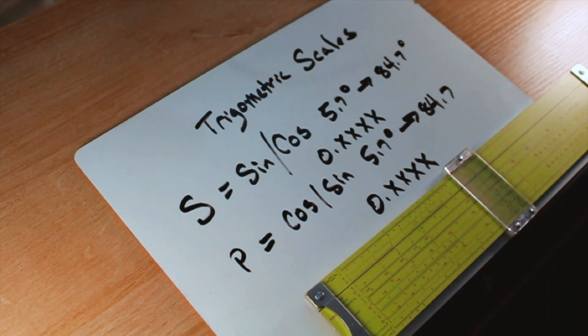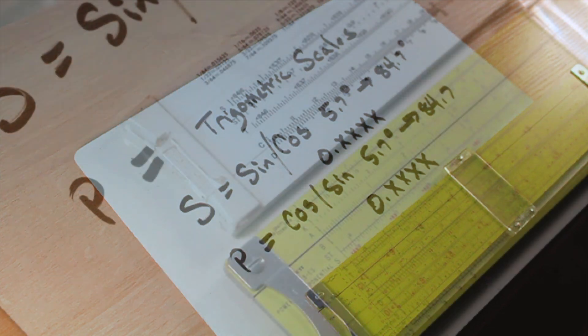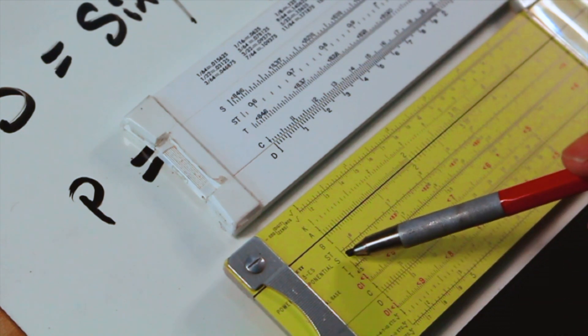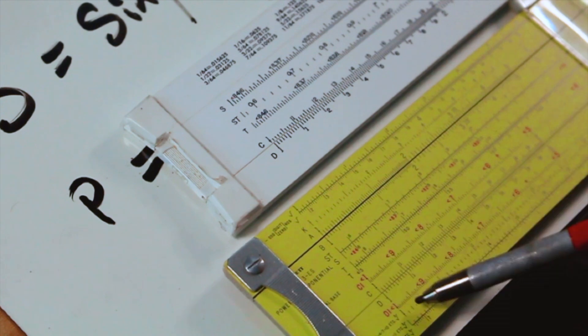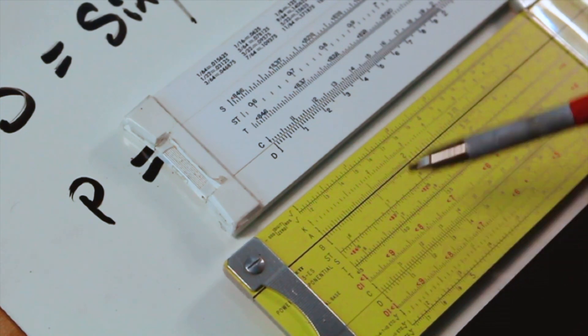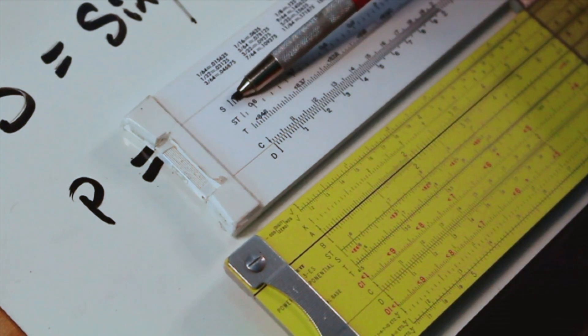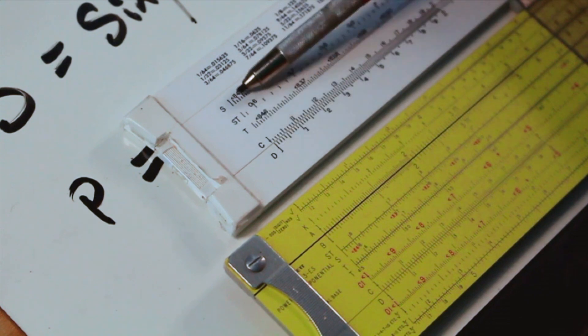Now let's have a look at this on an actual slide rule or two. The camera really doesn't like this yellow from the Pickett slide rule, does it? But I think you can still see the S-scale right here, and there's no P-scale on the Pickett.